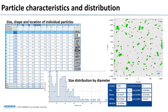The advantage of having access to individual particle characteristics is that when you have outliers or suspect particles, you can go back and examine their ellipse ratio or circularity, look into what's going on in your sample. And because you have the location, you can pick out that outlier particle for additional analysis as well.